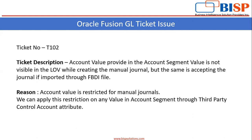What can be the reason behind this issue — is the account value restricted for manual journals? There is only one way where we can restrict any account value for creating manual journals: we can apply this restriction on any value in the account segment through the Third Party Control Account attribute.